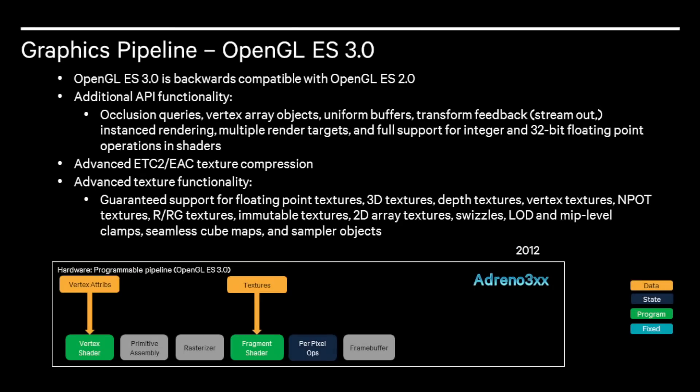With OpenGL ES3, the next generation of graphics hardware allowed even more advanced features to be implemented in mobile games. GL ES3 is backwards compatible with GL ES2. Additional API functionality added in OpenGL ES3 includes occlusion queries, vertex array objects, uniform buffers, transform feedback (sometimes called stream out), instance rendering, multiple render targets, and full support for integer and 32-bit floating point operations in shaders. The API also introduced new texture compression formats ETC2 and EAC, along with advanced texturing functionality including guaranteed support for floating point textures, 3D textures, depth textures, vertex textures, non-power-of-two textures, red and red-green only channel textures, immutable textures, 2D array textures, swizzles, LOD and mip level clamps, seamless cube maps, and sampler objects.